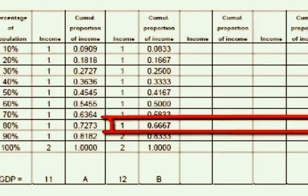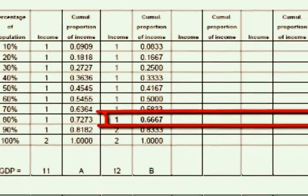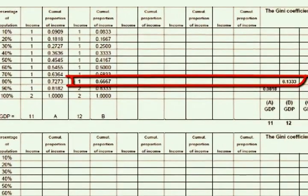In a world of perfect income equality, they should have 80% of the income. With 80% of the population earning $1 and 20% earning $2, the GDP is 12 and the Gini coefficient is 0.133.